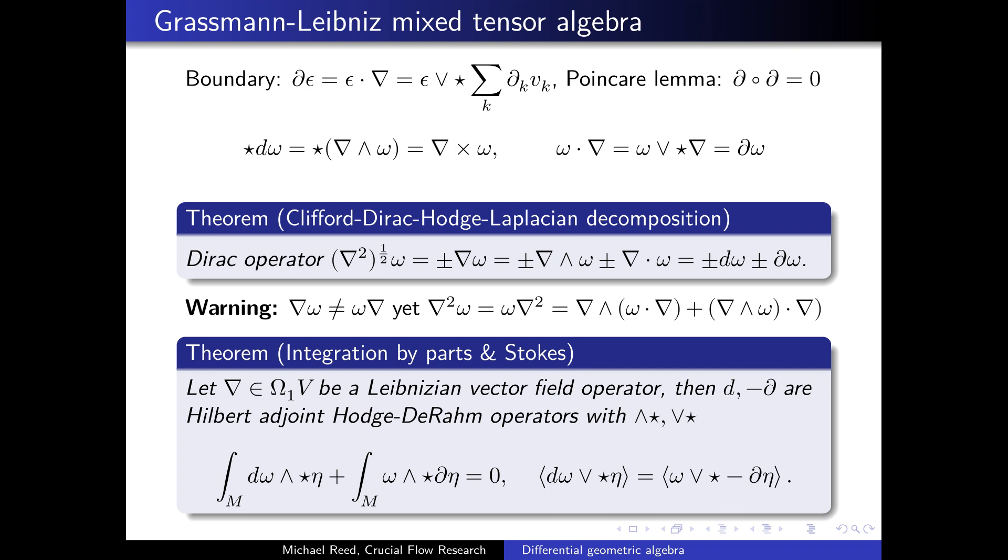If you do know differential geometric algebra, it's not such a great mystery because we can understand quite concretely what it is. It's just the product of Nabla and Omega, the geometric product. In particular, in this theorem, it's the decomposition into the sum of the boundary operator and the exterior differential. The sum equals the Dirac operator, which is the square root of the Laplacian.